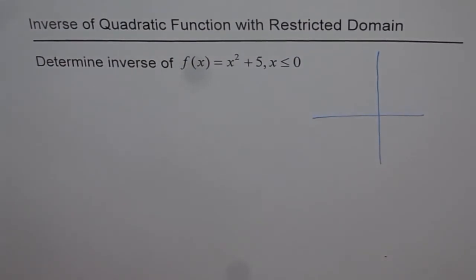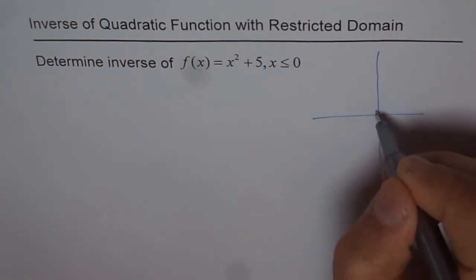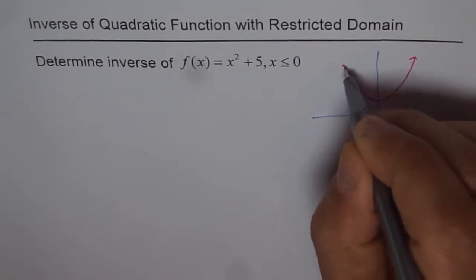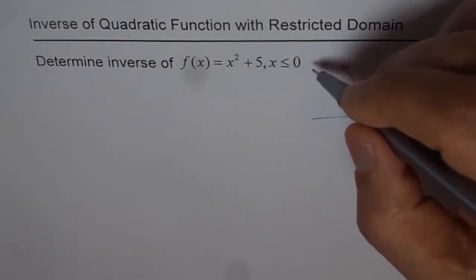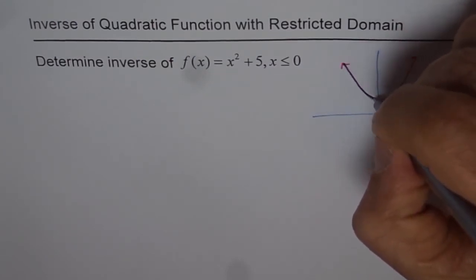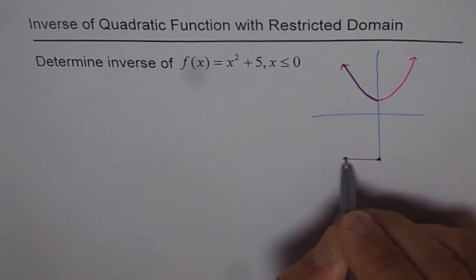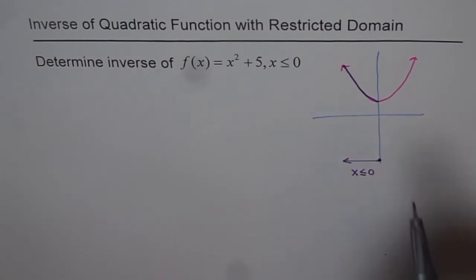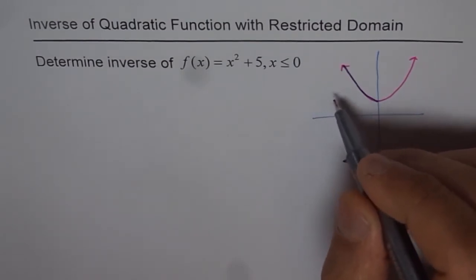x² + 5 means x² is a normal parabola, and the +5 shifts it up, so we get a parabola like this. Now, x ≤ 0 means we are considering only the left half of this function. So our domain is restricted to the left of zero.